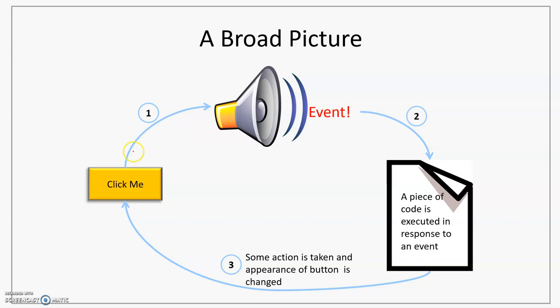Here we see a broader picture of what happens when an event occurs. In a GUI, let's say there is a component called a button and the user clicks on it — we say an event has occurred. The occurrence of the event results in execution of a piece of code responsible for taking some action associated with the event. The appearance of that component may also change so that the user knows the action has been registered.